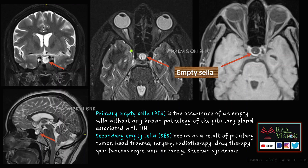Here you can see the empty sella — classical empty sella. Empty sella occurs because there is herniation of the CSF into the pituitary (sella) with resorption of the pituitary, and it can be partial or complete. Primary empty sella is occurrence without any known pathology of the pituitary gland and is associated with IIH, whereas secondary empty sella occurs as a result of pituitary tumour, head trauma, surgery, radiotherapy, drug therapy, or Sheehan's syndrome.